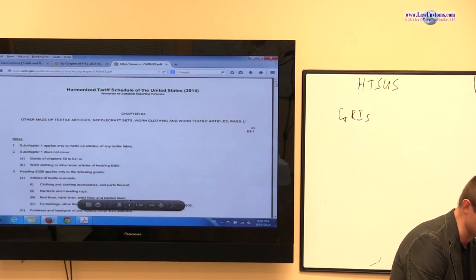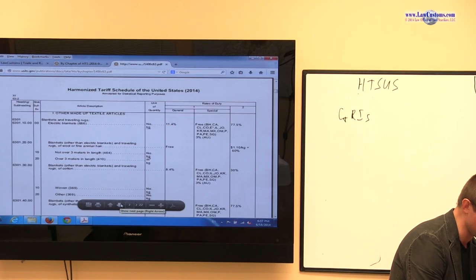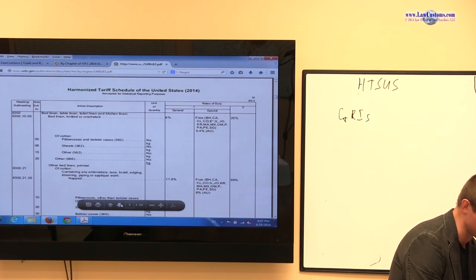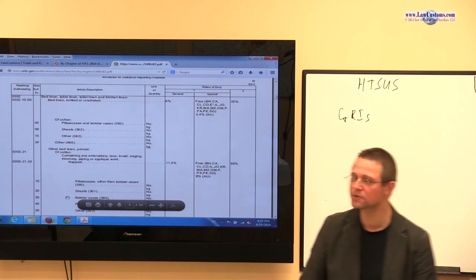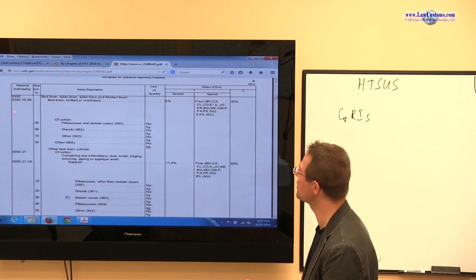Chapter 63, for example, which covers textile articles, shows the same trend. And you will see it all throughout the harmonized tariff schedule, where you have eight digits and a duty.